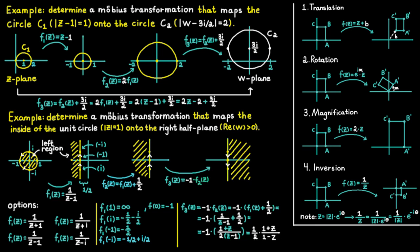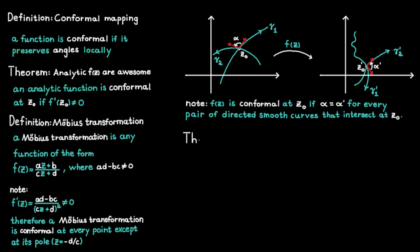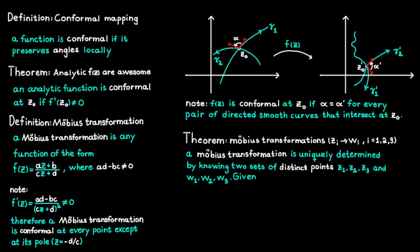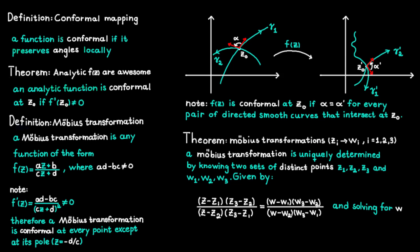Now I'm going to show you another method you can use to solve these kinds of problems. Note that this method can only be used if you know how three points are mapped. This comes from the fact that a Möbius transformation is uniquely determined by knowing two sets of three distinct points: the points C1, C2, C3 which are the points you are going to map, and the corresponding points W1, W2 and W3 which are the same points after they have been mapped. The transformation is then given by solving this equation for w, which comes from the fact that a Möbius transformation always preserves the cross ratios. To the left side you have a cross ratio before the mapping, and to the right side you have a cross ratio after the mapping, and these two cross ratios are always going to be equal in the case of a Möbius transformation.